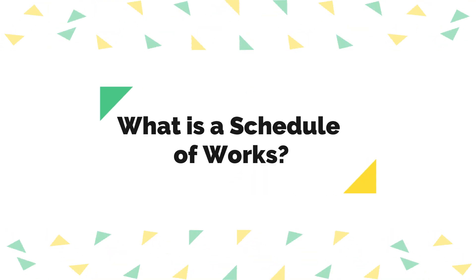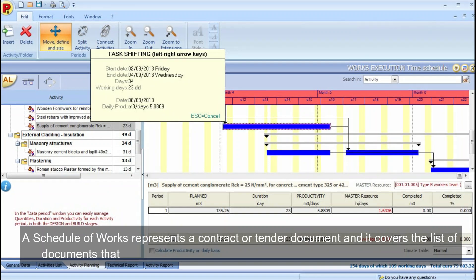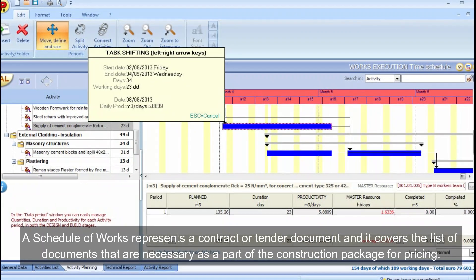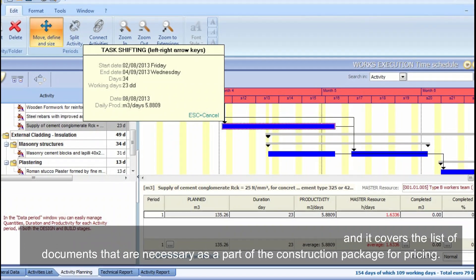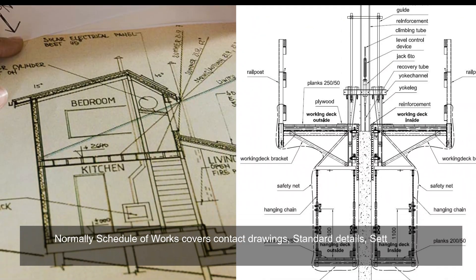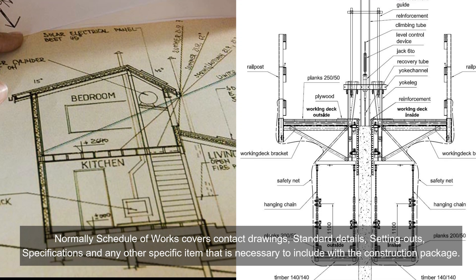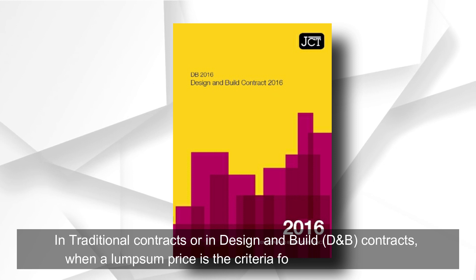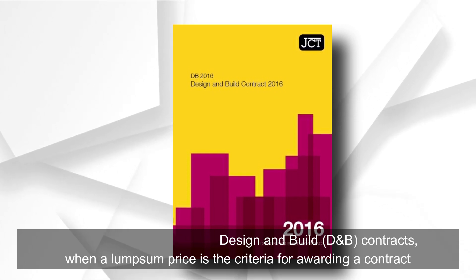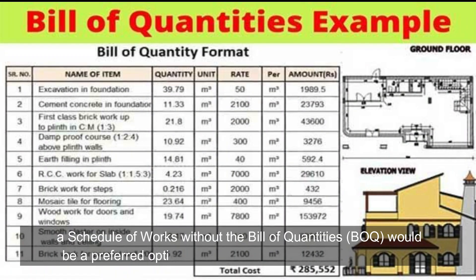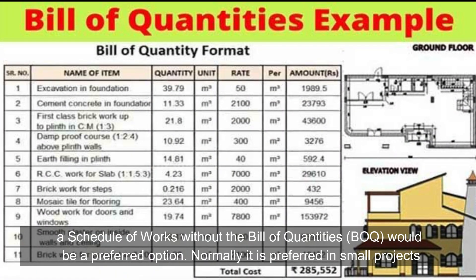A schedule of works represents a contract or tender document. It covers the list of documents necessary as part of the construction package for pricing. Normally, a schedule of works covers contract drawings, standard details, setting out, specifications, and any other specific items necessary to include. In traditional contracts or design and build (D&B) contracts where a lump sum price is the criteria for awarding a contract, a schedule of works without the bill of quantities is a preferred option.